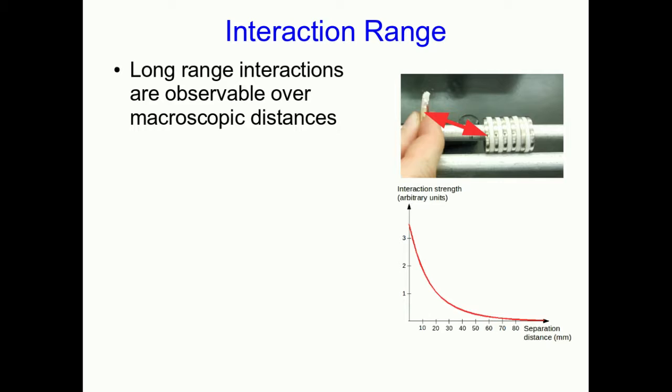As the magnets get close together, the interaction gets stronger. And it tails off towards zero over a distance of a few tens of millimeters, perhaps. And so we could talk about a few tens of millimeters as being the typical interaction range for that magnetic interaction.